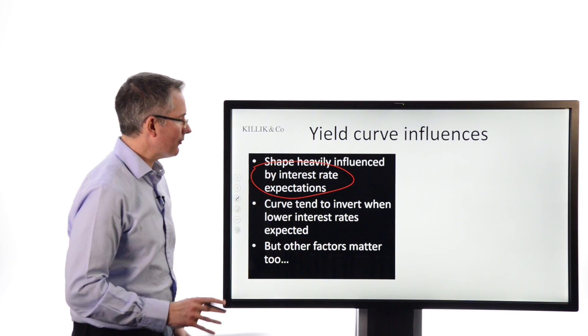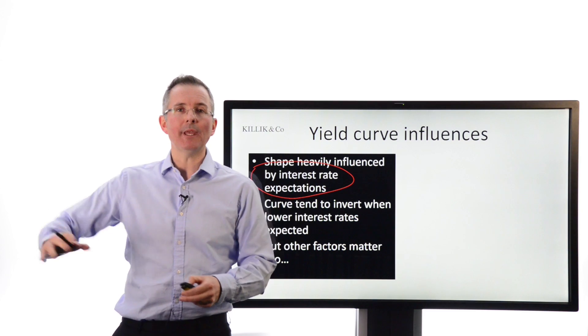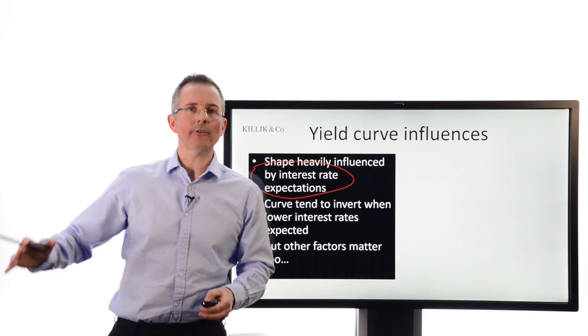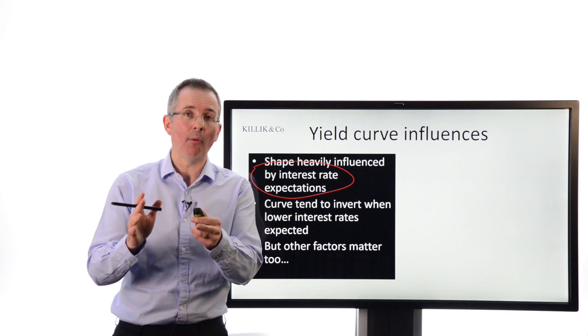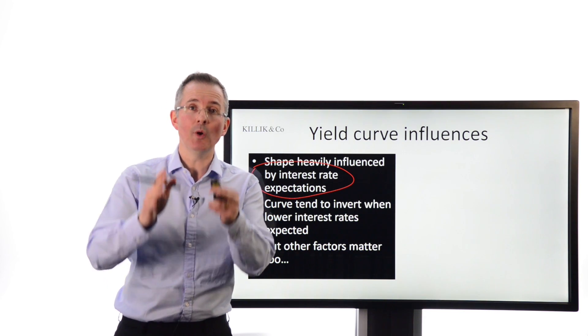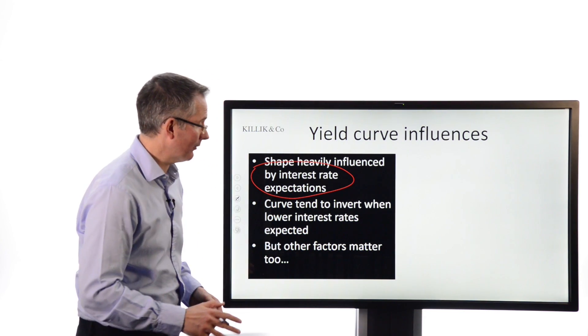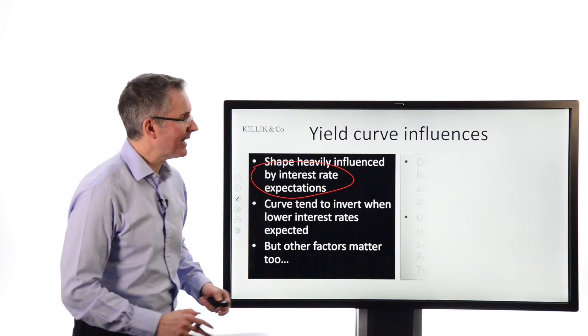it is heavily driven by interest rate expectations. The shape of the curve tends to be driven by that, but there are one or two other factors in play, as I'll highlight in just a moment. The curve tends to invert when interest rates are expected to fall. It tends to be normal when interest rates are expected at some point in the future to rise. Of course, no one knows for certain. It's bond market investors giving you their view in a snapshot, which is why yield curves are useful.